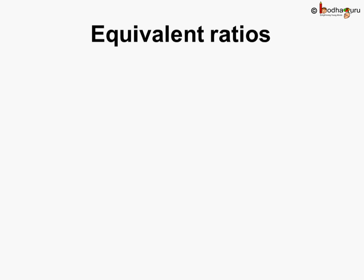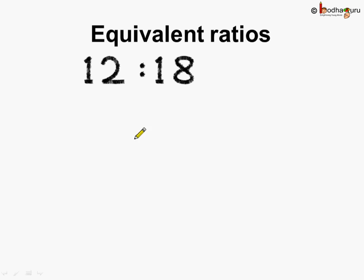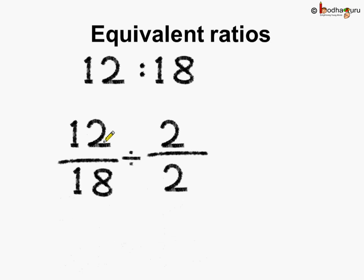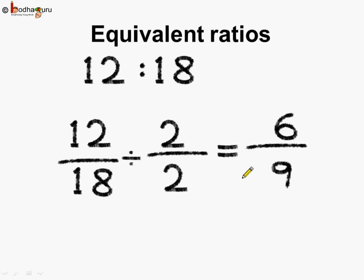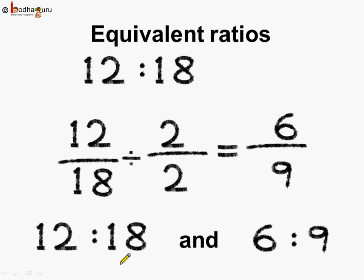Is there any other method? Yes, we can also find equivalent ratios using division. Let's see how. This is the ratio 12 is to 18 and we need to find its equivalent ratio. Here, we divided both the numerator and the denominator of the ratio by 2. So what do we get? 12 divided by 2 is equal to 6. 18 divided by 2 is equal to 9. So we got an equivalent ratio of 12 is to 18 which is equal to 6 by 9. So we can say 12 is to 18 and 6 is to 9 are equivalent ratios.